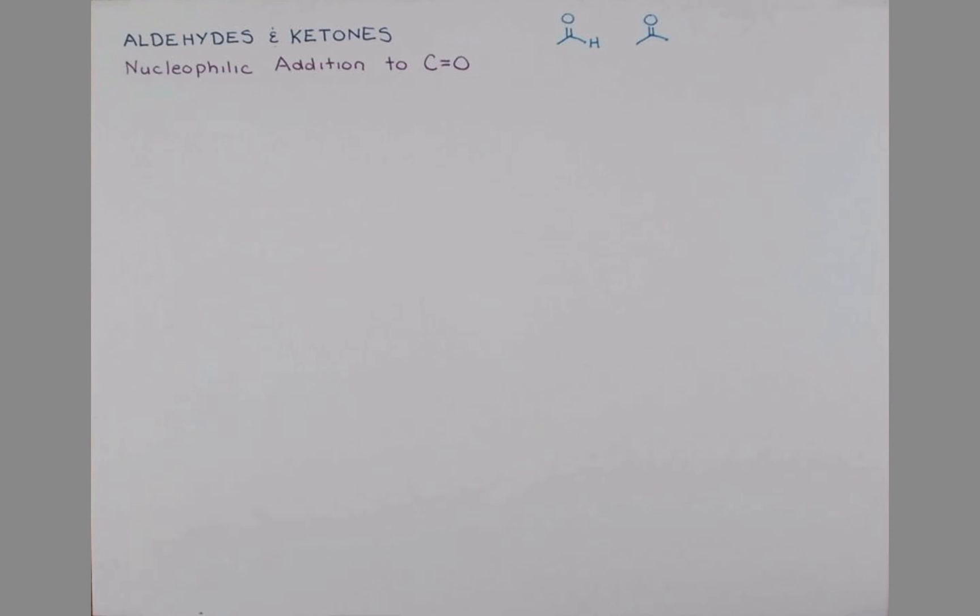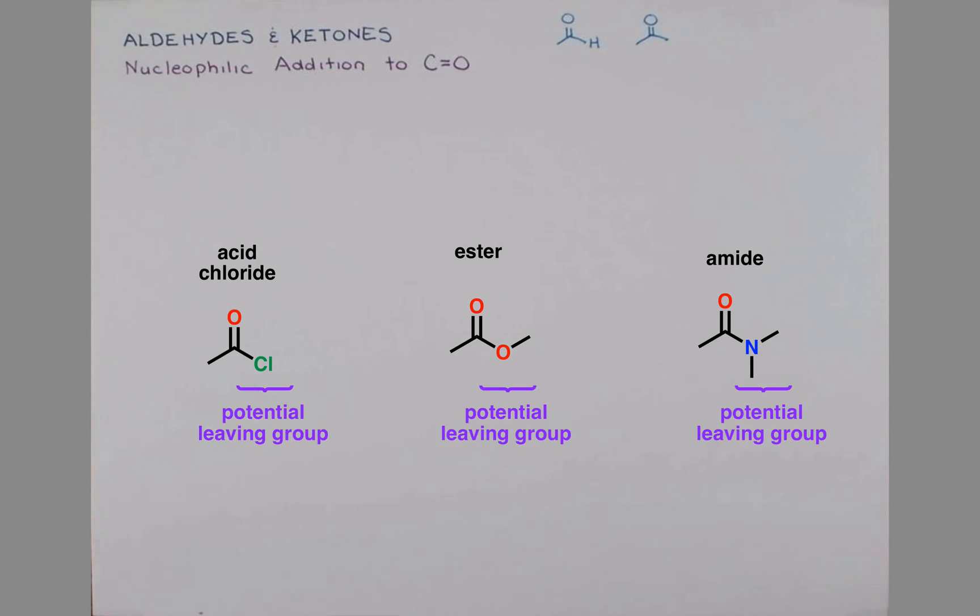It's important to make this distinction because there are other carbonyl-containing functional groups in organic chemistry. Some common ones are acid chlorides, esters, and amides. But these differ in reactivity from the aldehyde and ketone because they each contain a potential leaving group, so they react by a different mechanism.